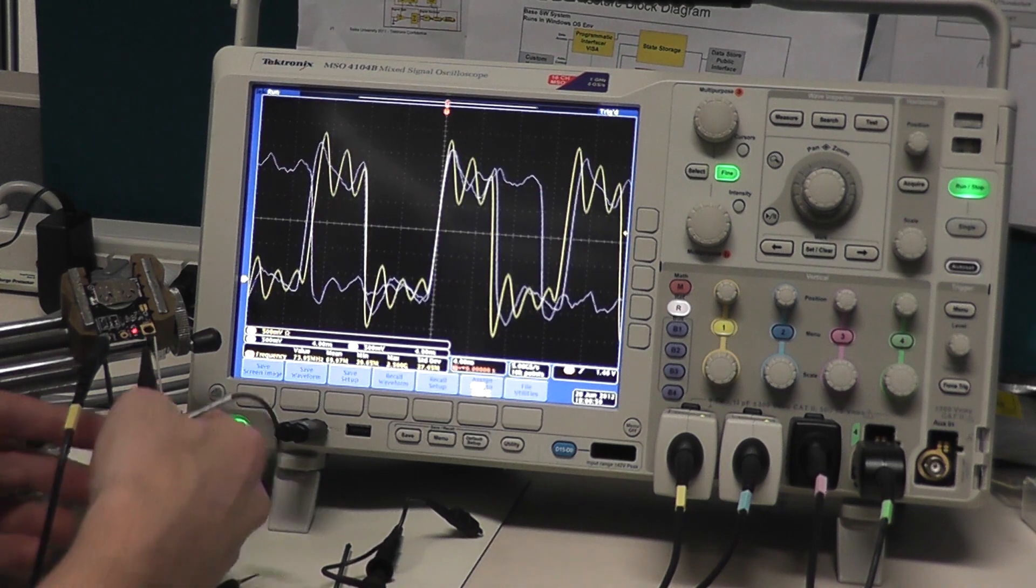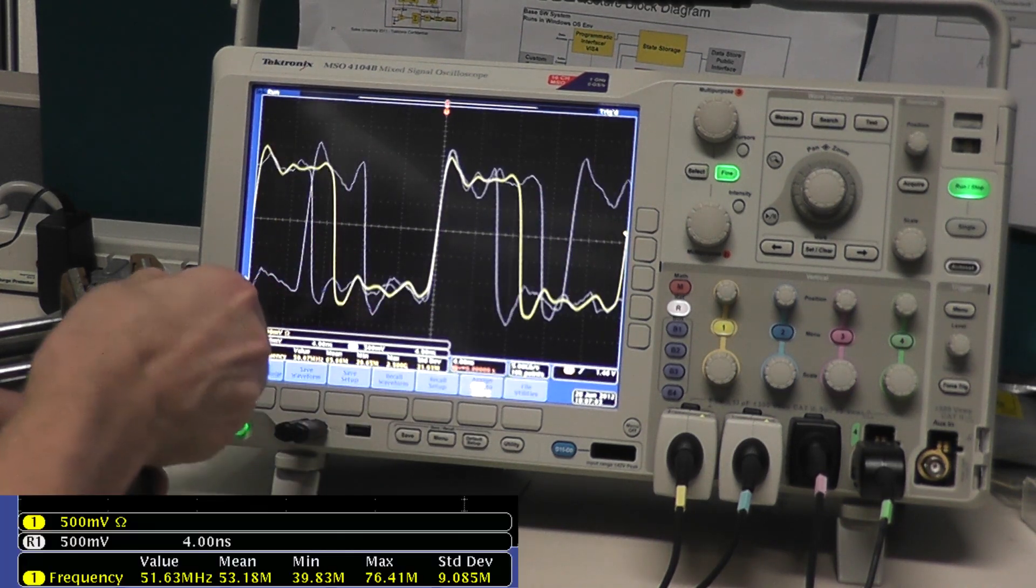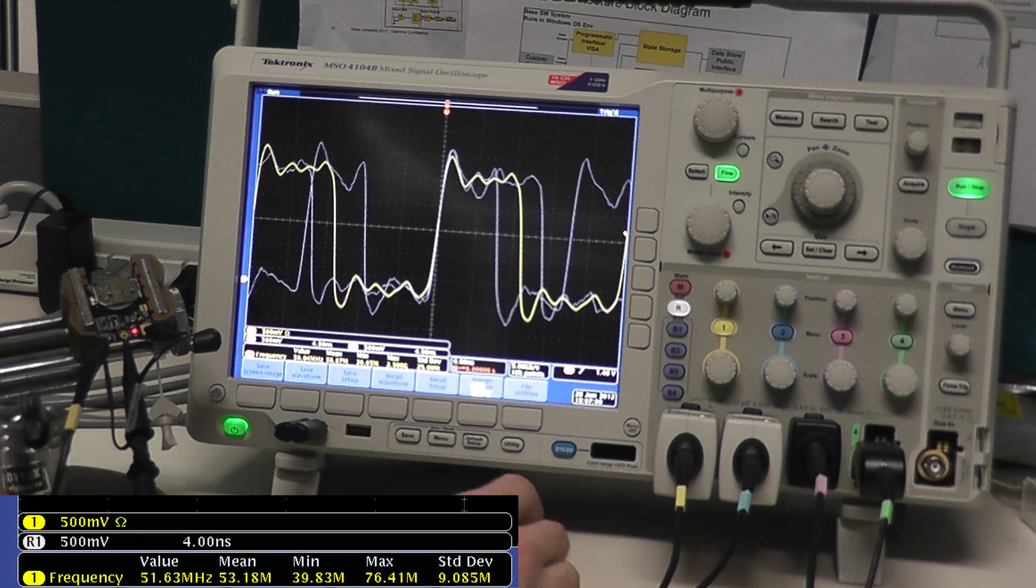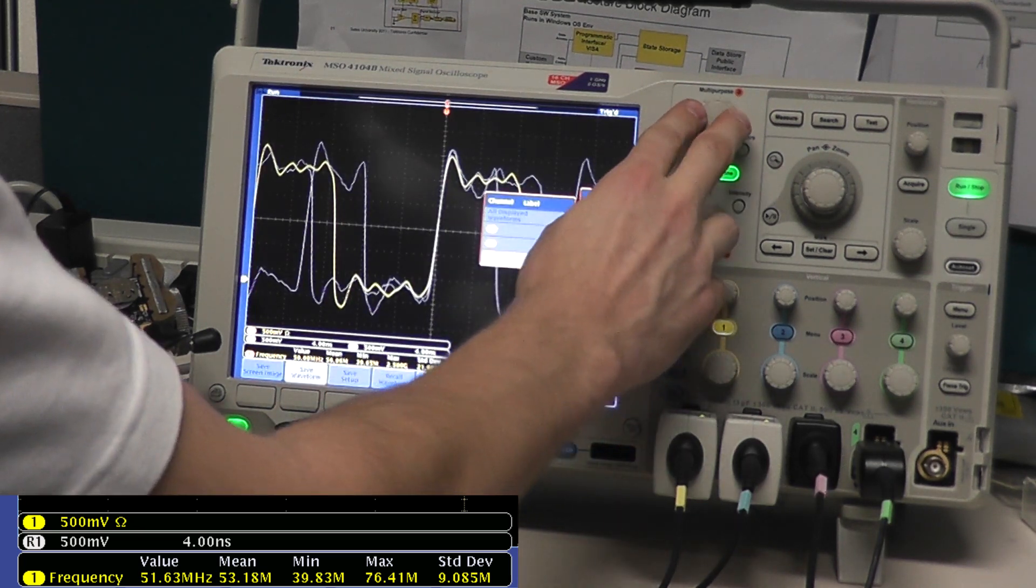Now this last probe is Tektronix TPP1000. It's got a capacitance of 3.9 picofarads and as you can see it doesn't affect my signal as much. I've got 51 megahertz on screen. I'm going to save this as a reference waveform so we can compare all three of these probes.